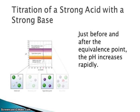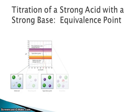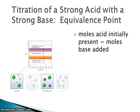The equivalence point is where the acid and the base end up in their stoichiometric ratio. For an HCl with NaOH titration, that's going to be a one-to-one ratio. As we start to get close to the equivalence point, the pH goes up very, very quickly — it's really sharp. At the equivalence point, the moles of acid initially present are going to equal the moles of base added from the buret. That's a really important thing to remember.